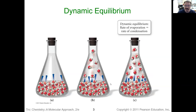Dynamic equilibrium is when we actually have constant small changes or motions, but the substance itself stays at equilibrium. So in this nice example, we have this sealed Erlenmeyer flask. We have water in here and at the initial point we have zero water vapor, so the only thing that's going to happen is evaporation — the rate of evaporation will be very high. But as we start to get water vapor in here, some percentage of those molecules will not have enough kinetic energy and they will condense back into a liquid, so we'll have a rate of condensation.